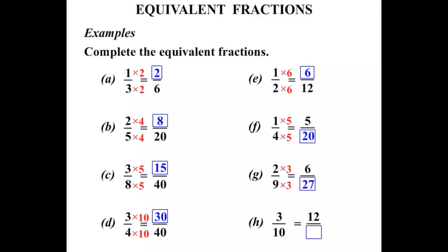3 tenths equals 12 over something. Again, we know the top numbers. So the 3 to turn it into a 12, we times by 4. If we times the top by 4, let's times the bottom by 4 as well. And 10 4's are 40.